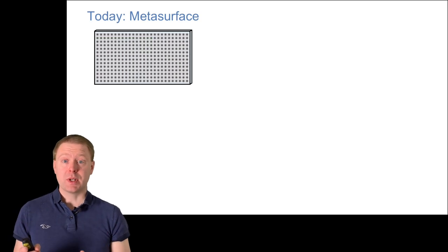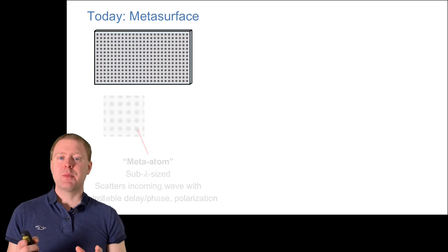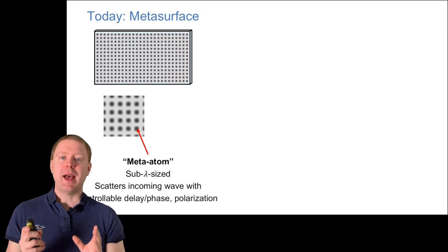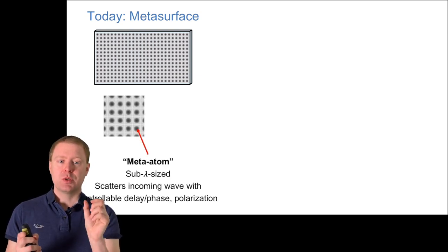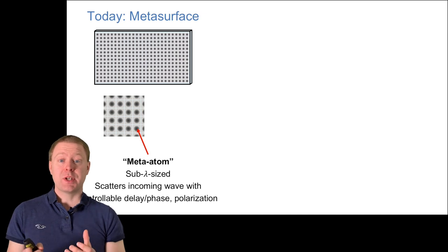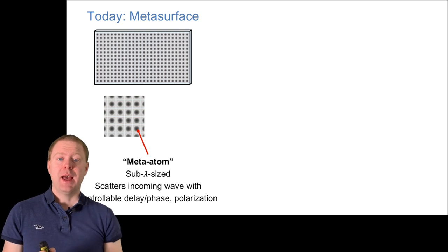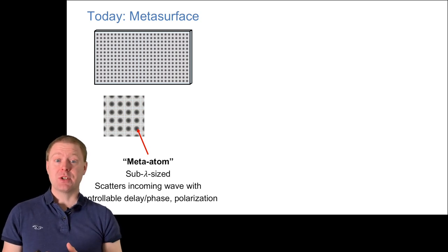Today people mainly talk about metasurfaces. We say they contain small atoms, meta atoms—small scattering elements that are sub-lambda size, where lambda is the wavelength. These scatter incoming waves with a controllable delay, which leads to a controllable phase shift with small bandwidth, and we can also control the signal polarization.